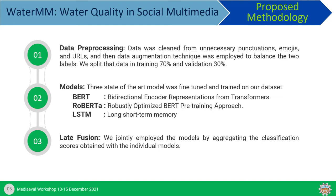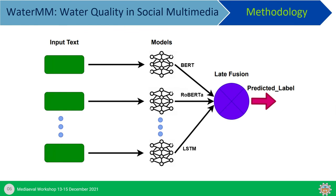At the end, Late Fusion was employed and we jointly combined the models by aggregating the classification scores obtained from the individual models. This is the high-level flow diagram of our project, where the input layer takes text, passes it through a network layer with BERT, RoBERTa, and LSTM, and then Late Fusion is applied to get the predicted label for each sample.